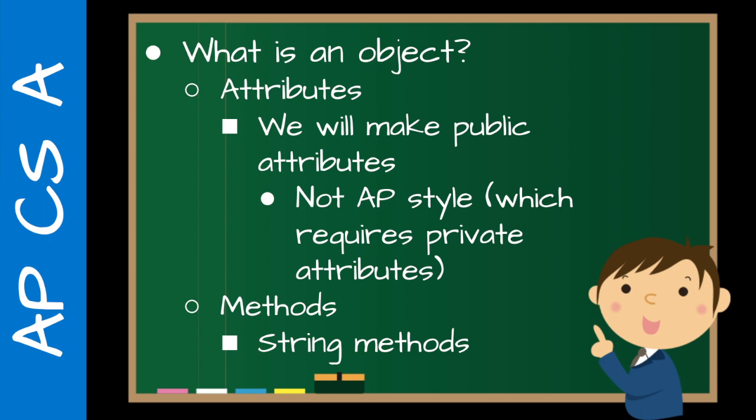That's why I said this part is not pure AP style, which requires private attributes. You could easily combine setters and getters and private attributes here, but I like to do it a little bit separately — it helps students who are having trouble adjusting to Java's complexity. Methods we've already seen with strings, so there is some schema, some background information the students can build on.